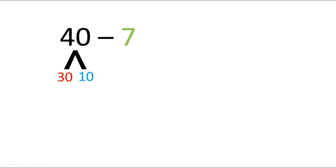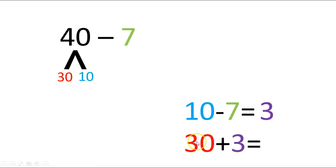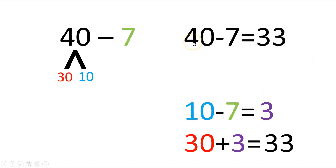So now we need to make our next number sentence. Do you remember what we're taking from here? We're going to take the 10 minus 7 equals — what is 10 minus 7? Go ahead and write that down. Did you write 3? If you did, give yourself a kiss on the brain. Now we need to write our next number sentence: take that 30 plus this 3 here. What's 30 plus 3? 33. So our number sentence should look like 40 minus 7 equals 33.